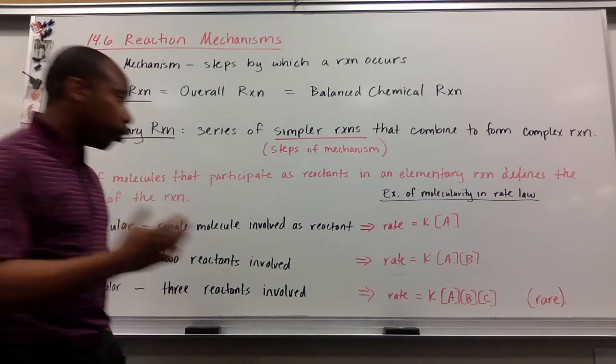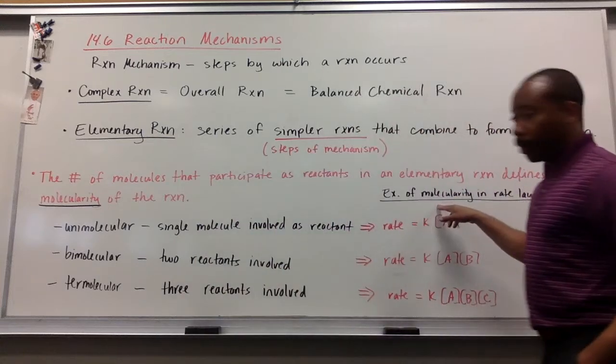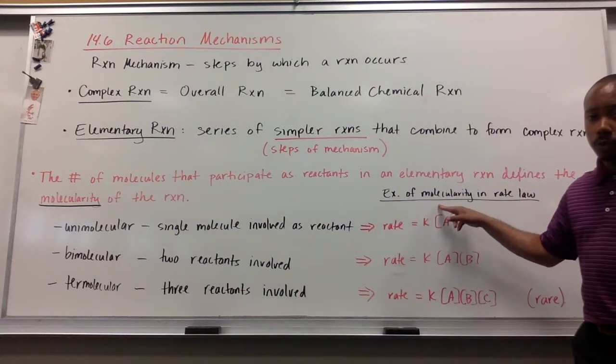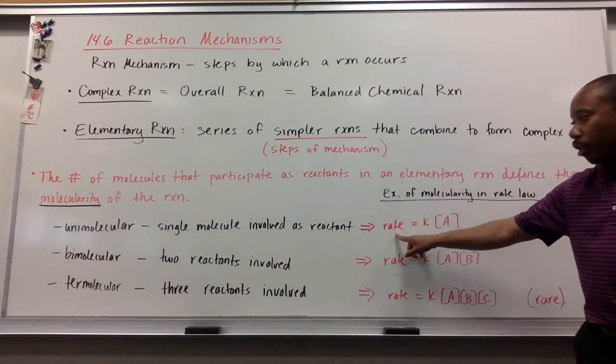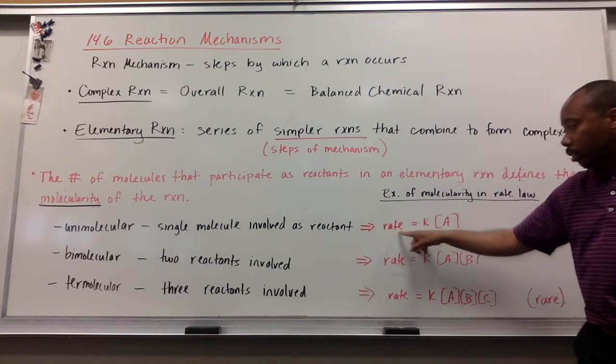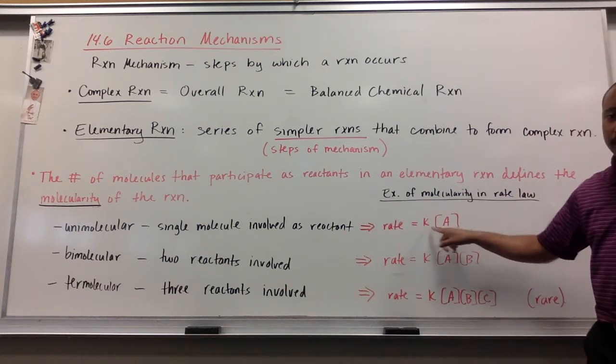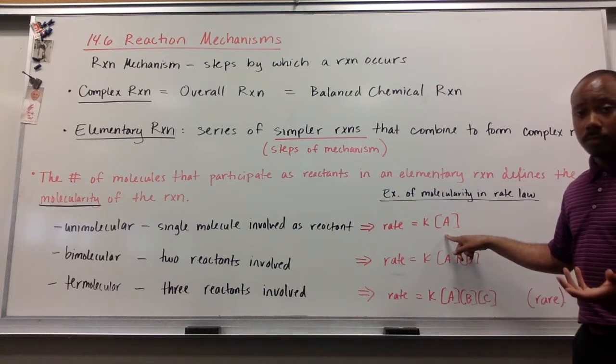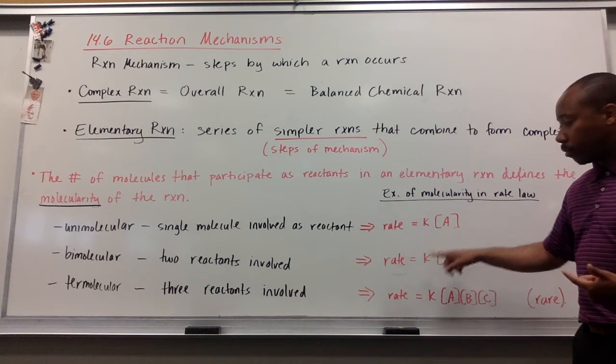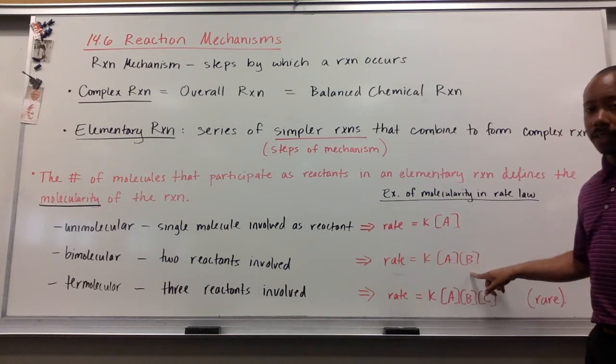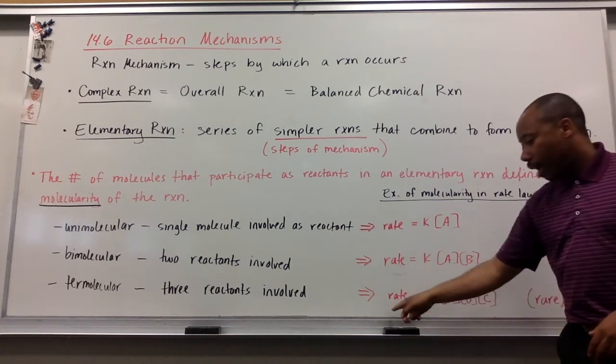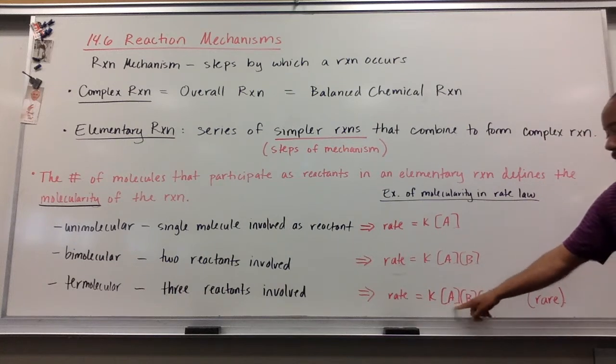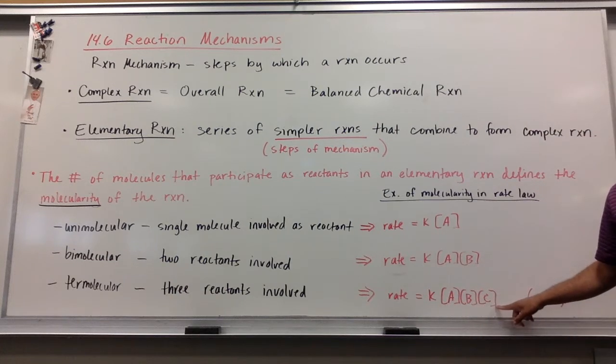If I relate this to rate laws, we can look at molecularity in rate laws as well. If I have the rate law for something that's unimolecular, that means the rate is equal to K, my rate constant, times the concentration of one reactant. If it's bimolecular, the rate law has two reactants, A and B. If it's termolecular, that rate law or that reaction will have three reactants.